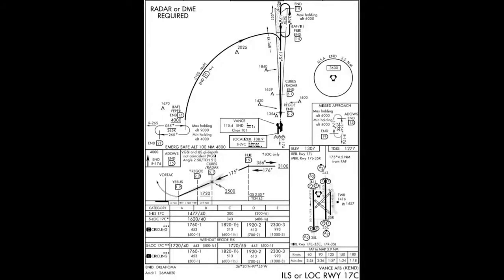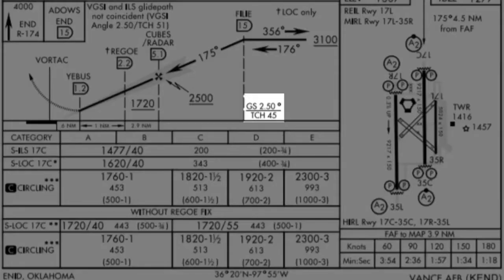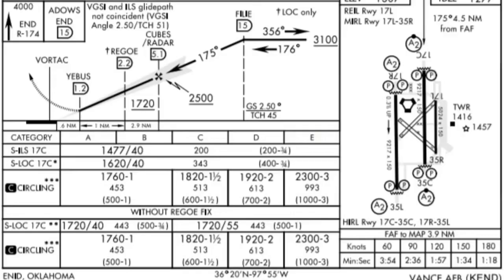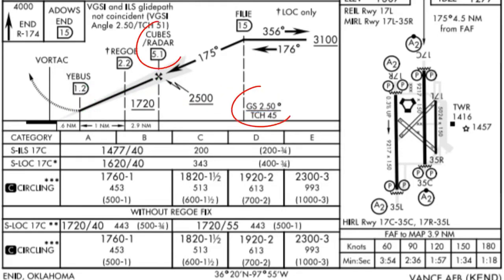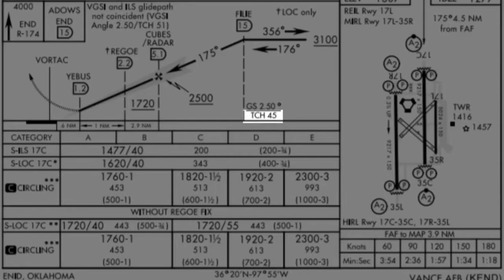Mission planning for a Constant Descent Final Approach is very simple. First, the instrument procedure needs to have a published vertical descent angle, or VDA. The VDA ensures obstacle clearance from the FAF altitude down to the runway on a specific glide slope angle. In other words, starting a descent from a fix at 2,500 feet on a two-and-a-half-degree glide slope angle will get you down to the runway at a threshold crossing height of 45 feet above the end of the runway.